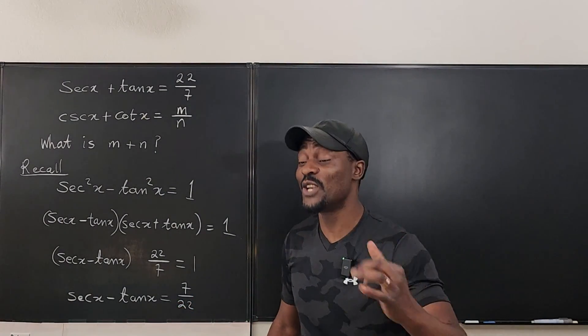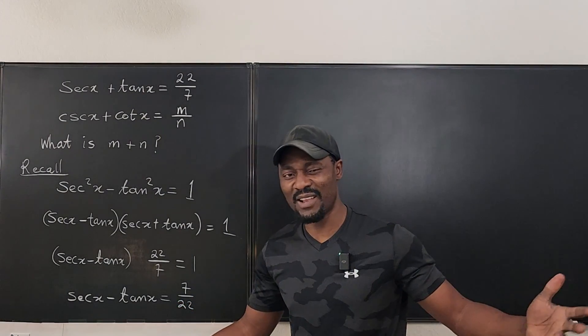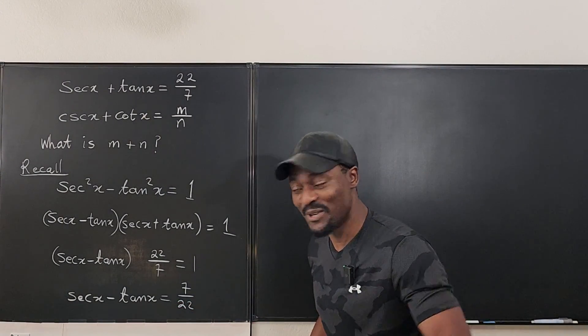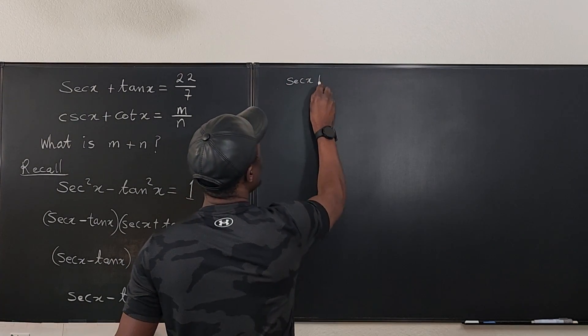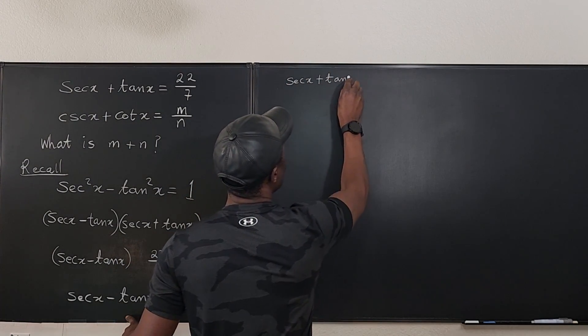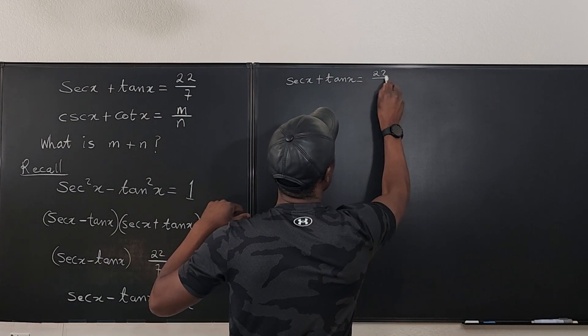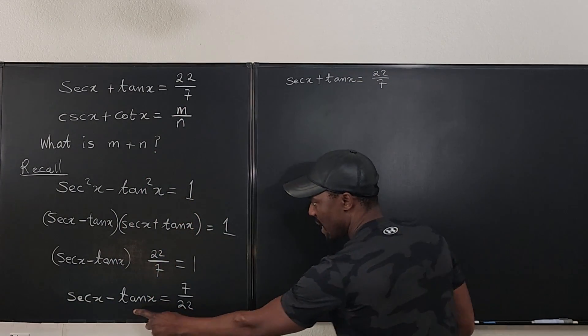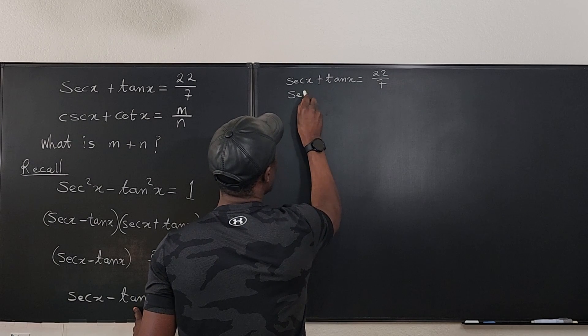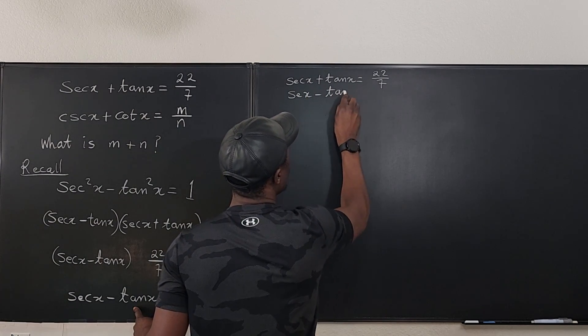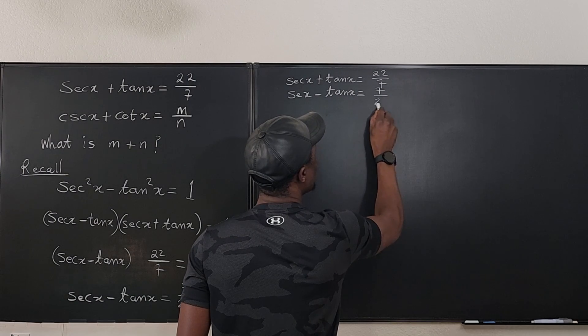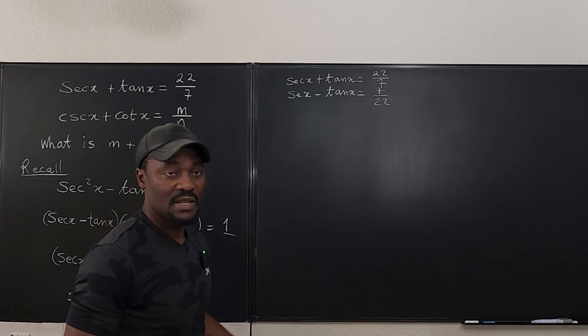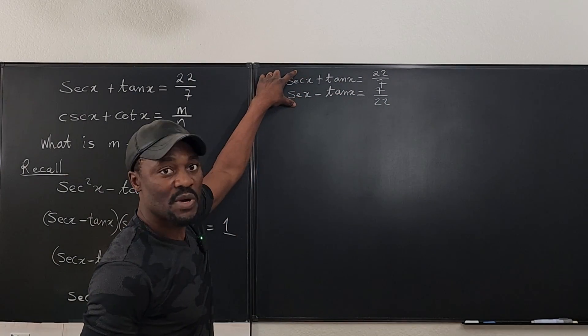Once you know what sine is, you can know what cosine is. You know how to do that from your trig class. Yeah, that's what we do. So let's go here and say that secant x plus tan x equals 22 over 7. And we also know that secant x minus tan x equals 7 over 22.